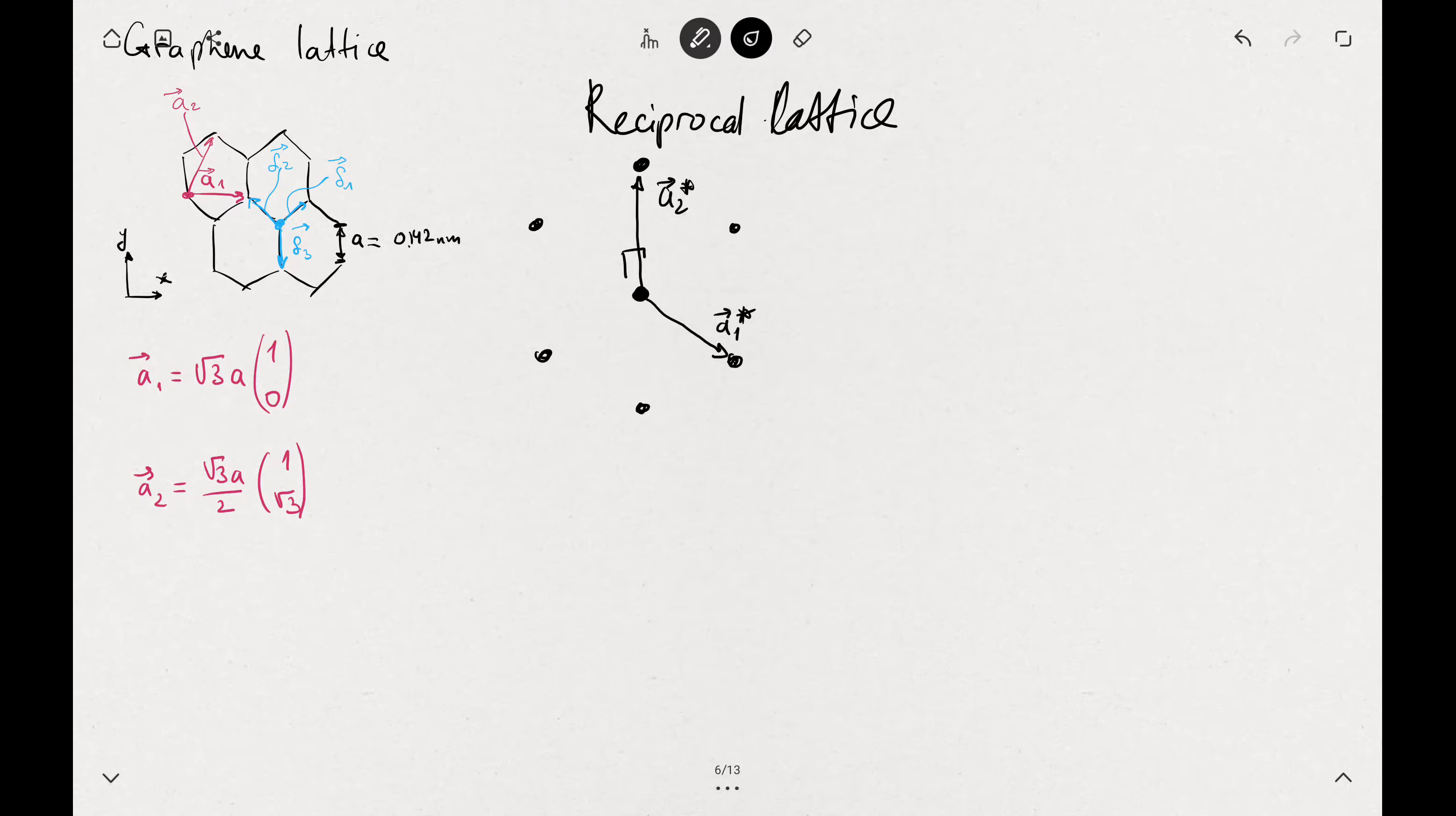If you write the basis vectors for real lattice as the column vectors, we will write those as the row vectors. A1 star in this definition will be 2π over the square root of 3a and it's 1 and minus 1 over the square root of 3. And A2 star will be 4π over 3a and it's 0 as you can see from the graph.